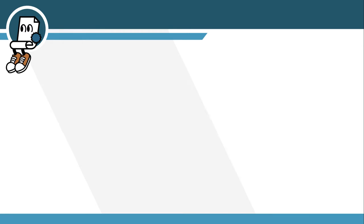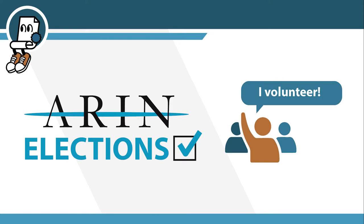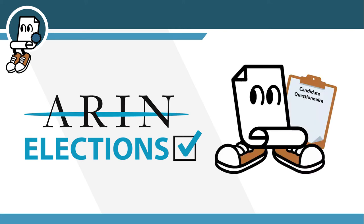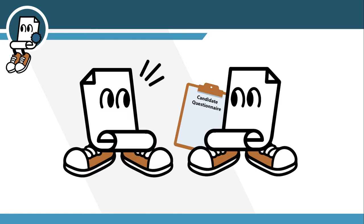Are you ready to go further? Consider running in the next election. Each fall, representatives from ARIN's general members in good standing elect candidates to the ARIN Board of Trustees and Advisory Council to serve their staggered three-year terms. To appear on the ballot, any individual may self-nominate during the established period and submit a completed candidate questionnaire. The nomination committee will classify all nominees based on their qualifications, and all qualified candidates will be put forward on the ballot.